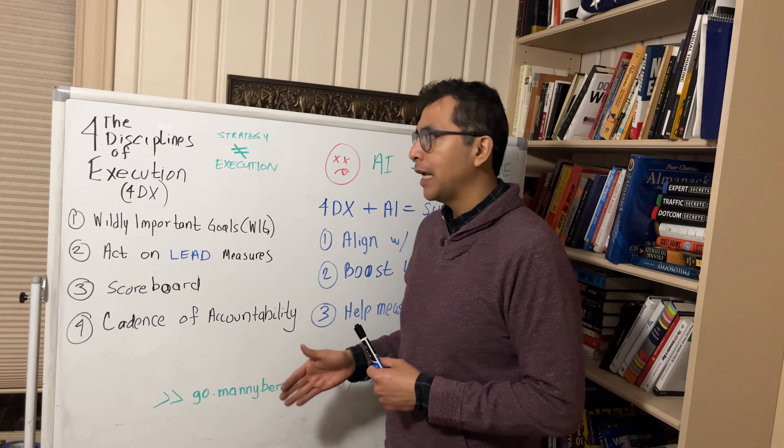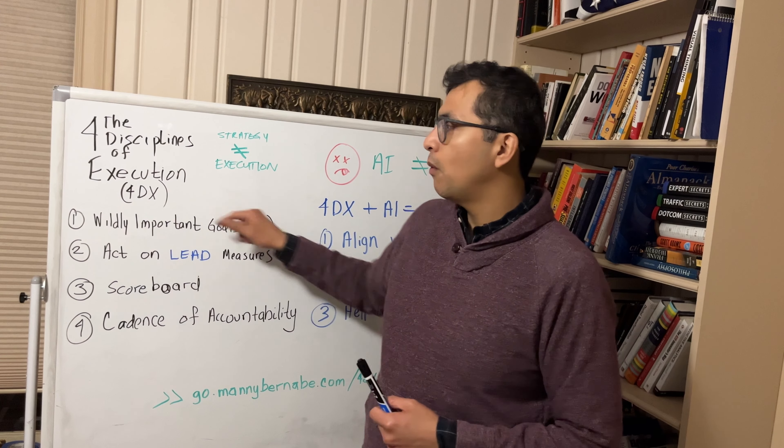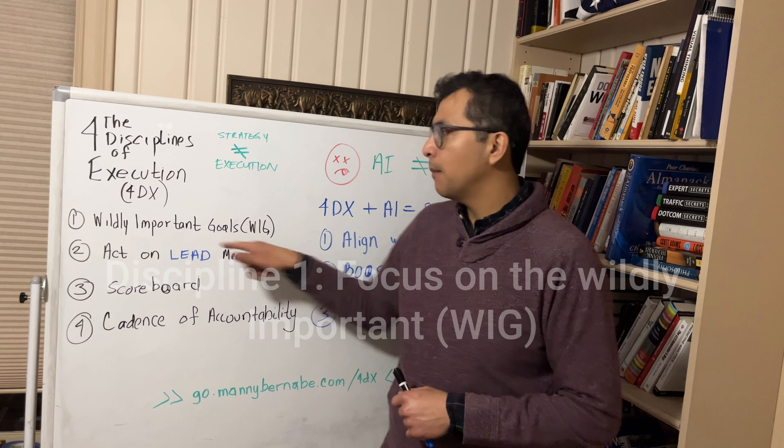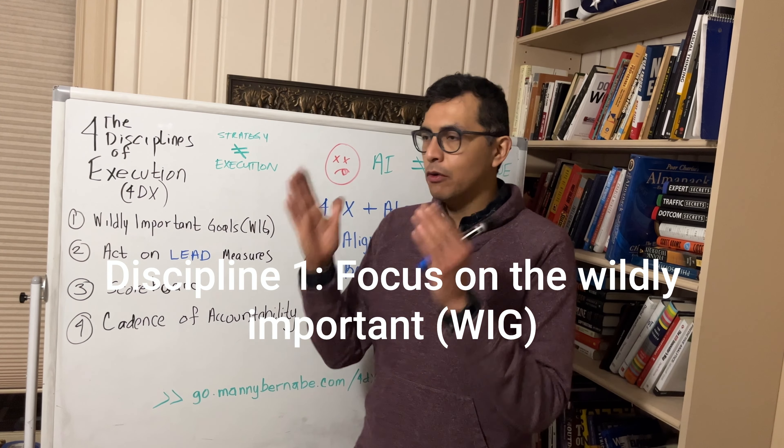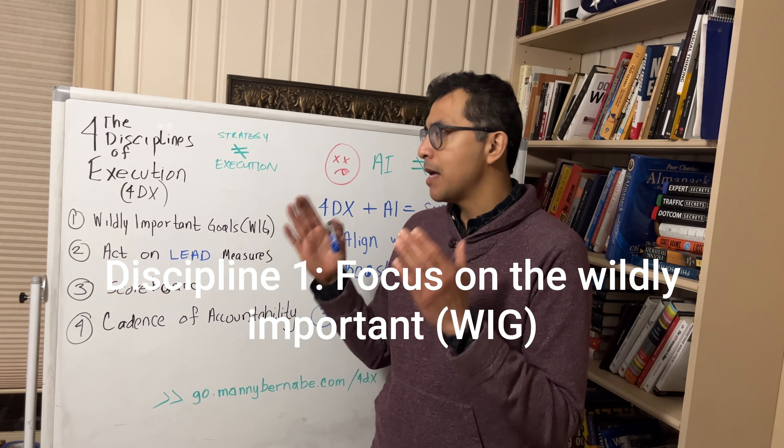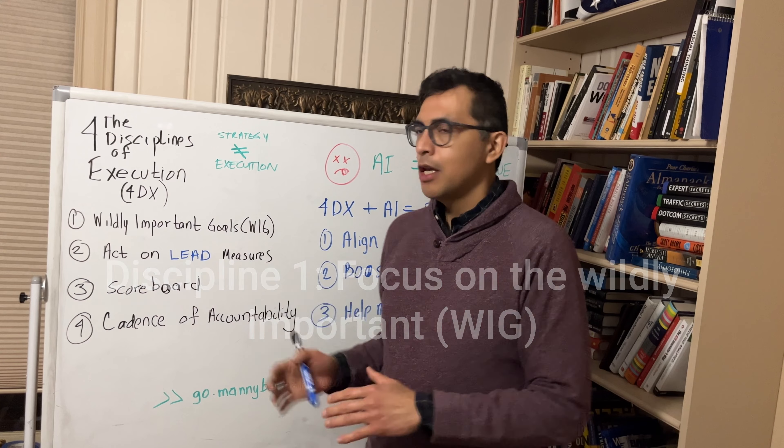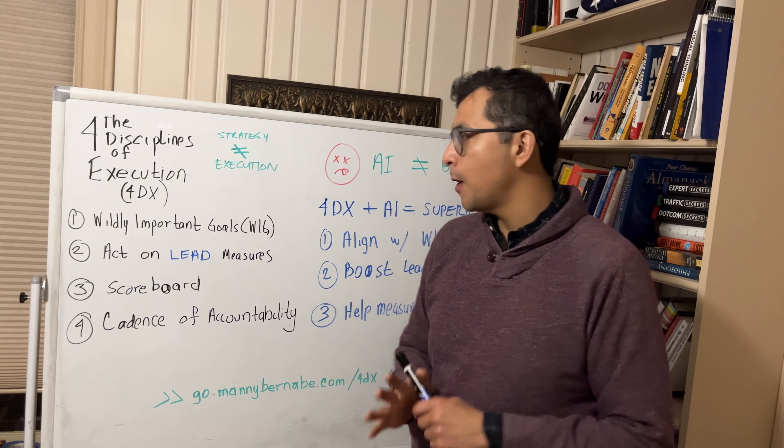And these are the four principles that are laid out by the authors of 4DX. Principle number one is working on wildly important goals. So narrow your focus on the thing that matters the most in a particular period. Don't do 10 things. Do one thing really, really well.